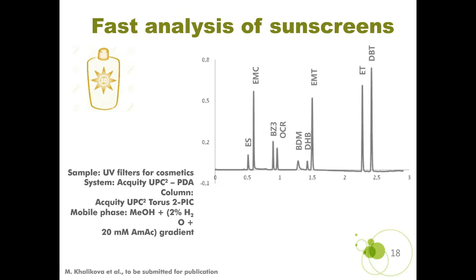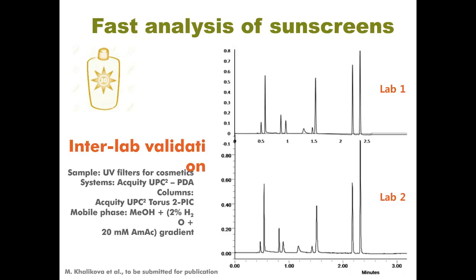The methanol co-solvent comprises 2% water and 20 millimolar ammonium acetate to allow for elution and good peak shapes of the most polar UV filters. This method was fully validated, including inter-lab validation. The same separations were obtained in a first laboratory in France and a second one in Czech Republic, both using the Waters UPC2 system.